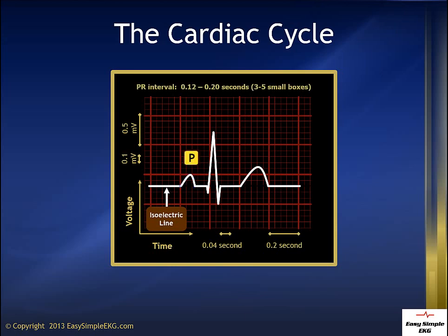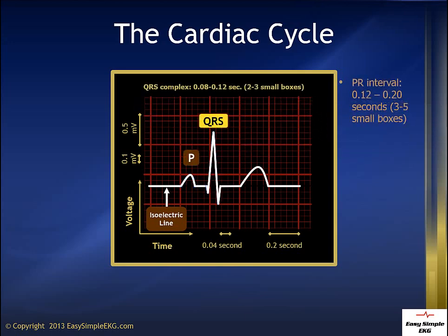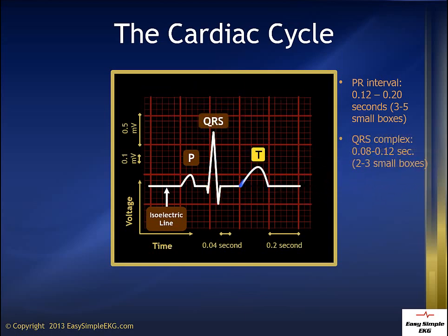We can see that the P wave leaves the isoelectric line and returns back to it. The QRS complex leaves the isoelectric line and returns, and the T wave leaves the isoelectric line and returns as well.